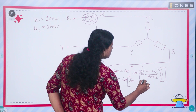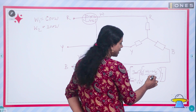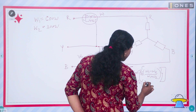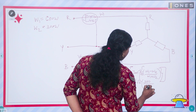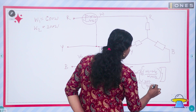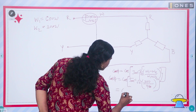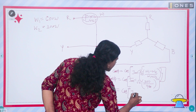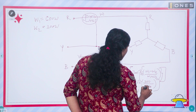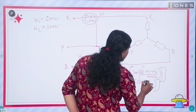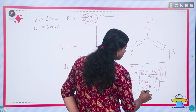Substituting the values: W1 is 600 and W2 is 300. So we get cos of tan inverse of root 3 into (600 minus 300) divided by (600 plus 300), which is 300 divided by 900, giving cos of tan inverse of root 3 into (1 by 3).